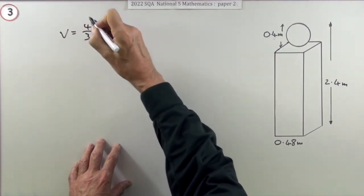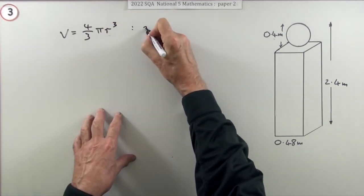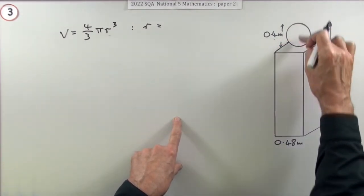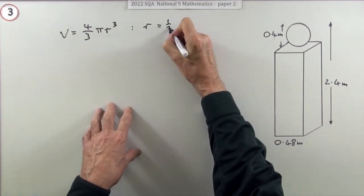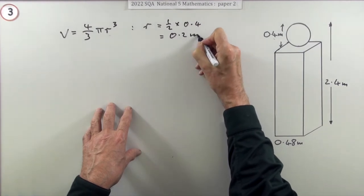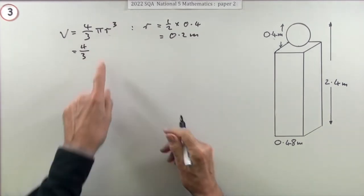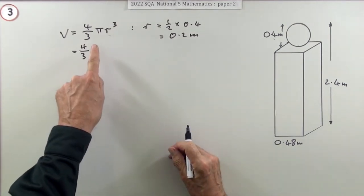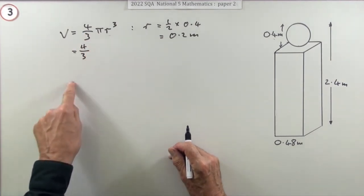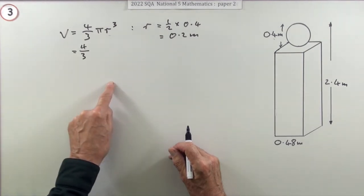First, the top. That's a sphere. You either remember this, 4/3 π r³, or you can look it up. The radius isn't 0.4, that's all the way across. 0.4 is the diameter so that'll be half of that, 0.2 meters.